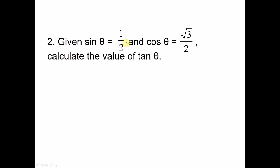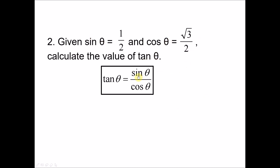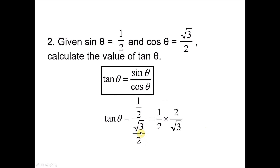Question 2: given sine θ = 1/2 and cosine θ = √3/2, calculate tangent θ. Using the formula, tangent θ = (1/2) ÷ (√3/2). Dividing fractions, this becomes (1/2) × (2/√3). The 2s cancel, giving 1/√3 as the final answer.